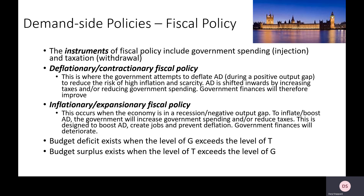The opposite of that would be what we call inflationary or expansionary fiscal policy, which would be used in a negative output gap. Here, aggregate demand would be too low, so we'd increase aggregate demand by raising government spending and/or reducing taxes. That would have the desired effect of raising aggregate demand back towards trend rates or the LRAS, and would helpfully create more jobs. However, inflationary fiscal policy would lead to government finances deteriorating — budget deficits would get bigger or budget surpluses would get smaller.